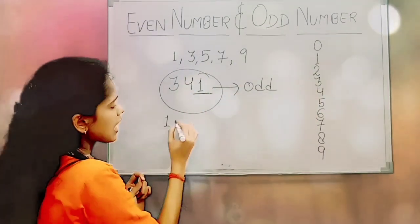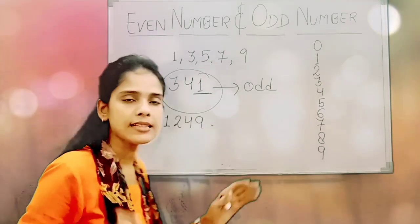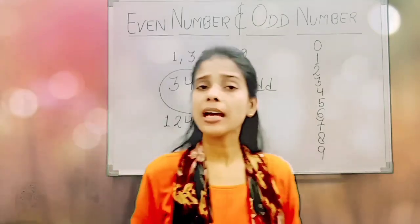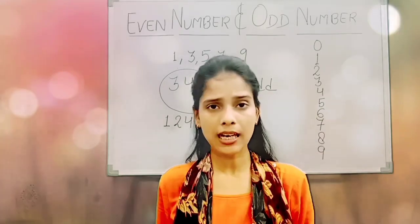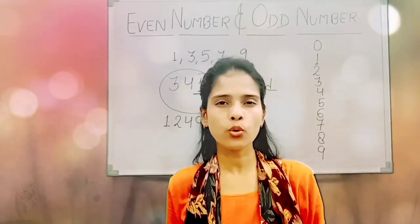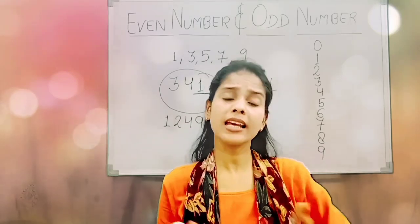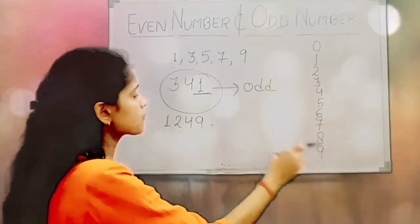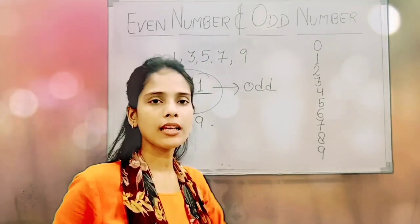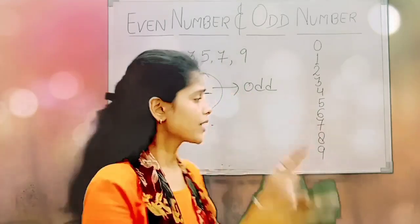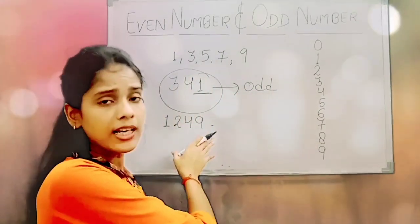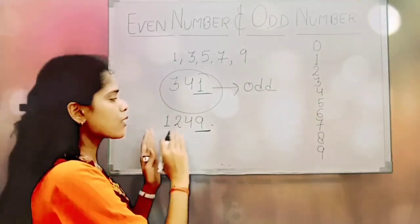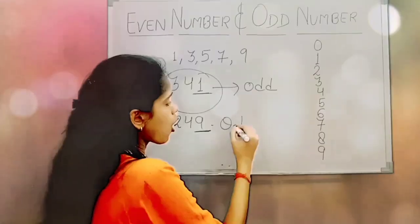For example, if I ask you: 1249 — is this even or odd? Even ke liye ones place pe 0, 2, 4, 6, ya 8 hona chahiye. Aur odd ke liye ones place pe 1, 3, 5, 7, ya 9 hona chahiye. Toh aap dekho, isme ones ki place pe kaun sa number likha hai? Nine. So one thousand two hundred forty-nine is odd number.